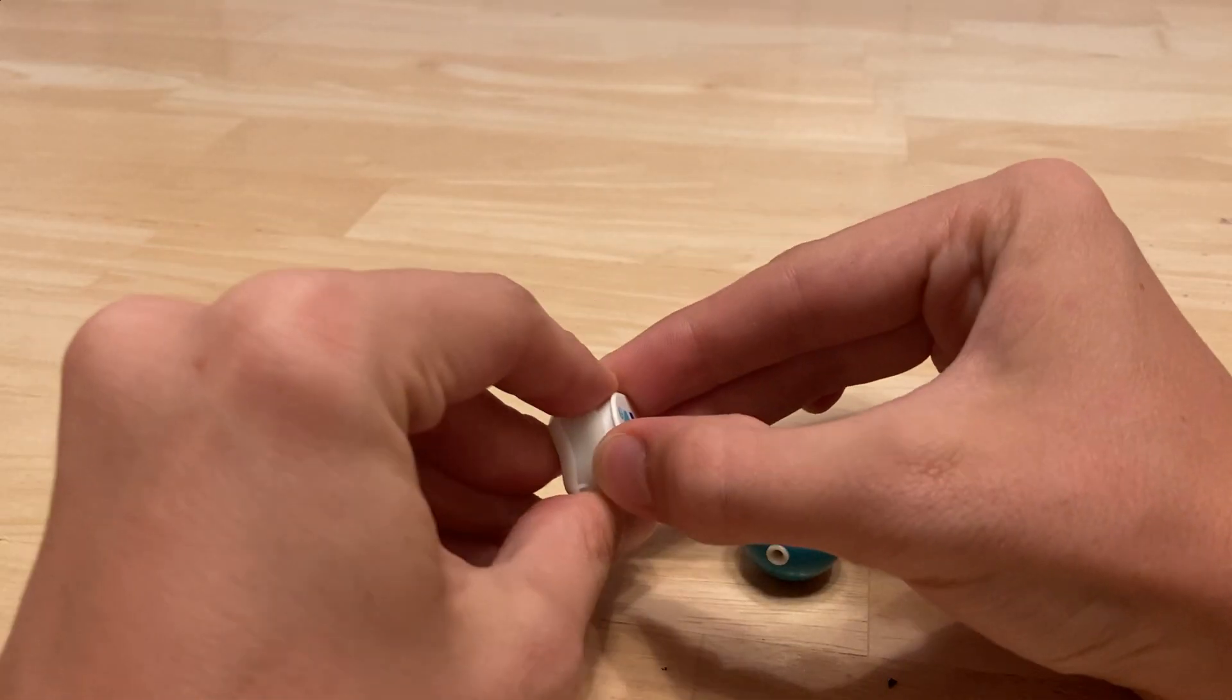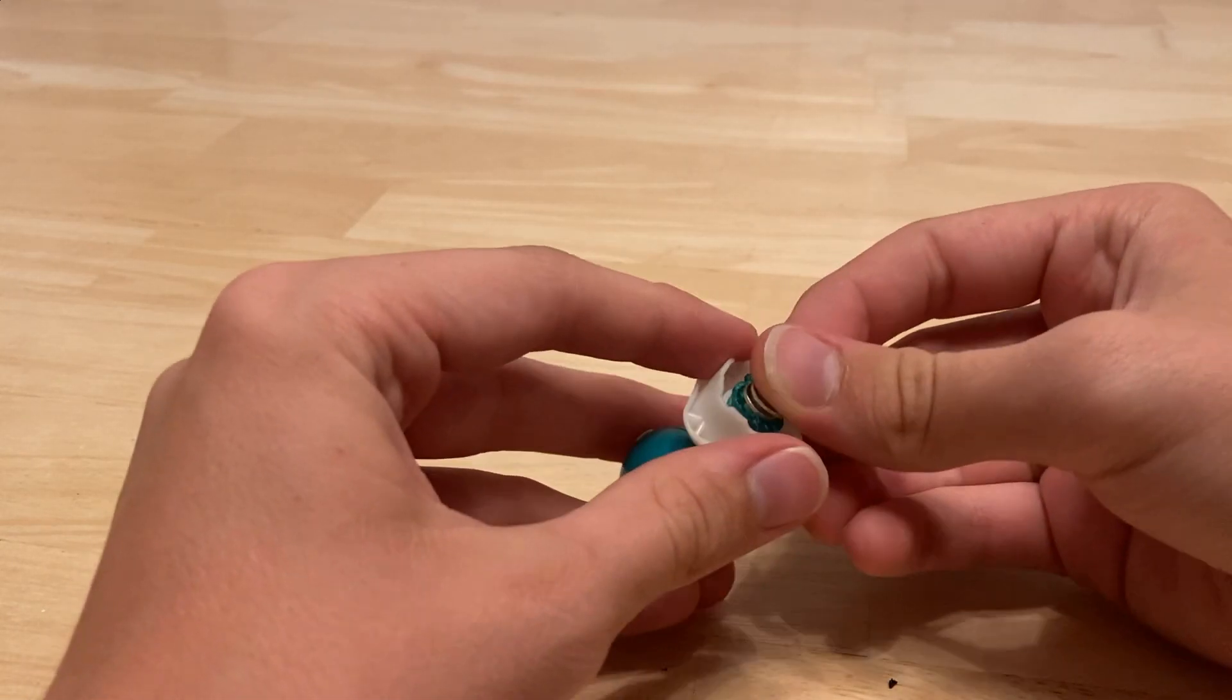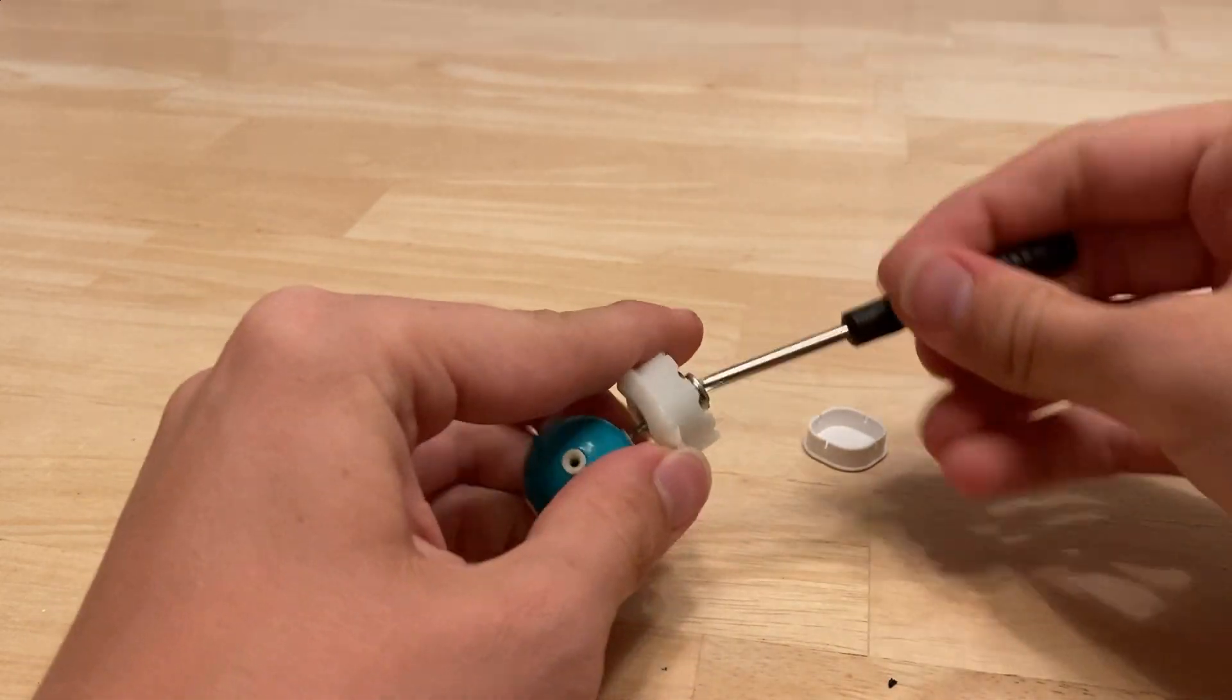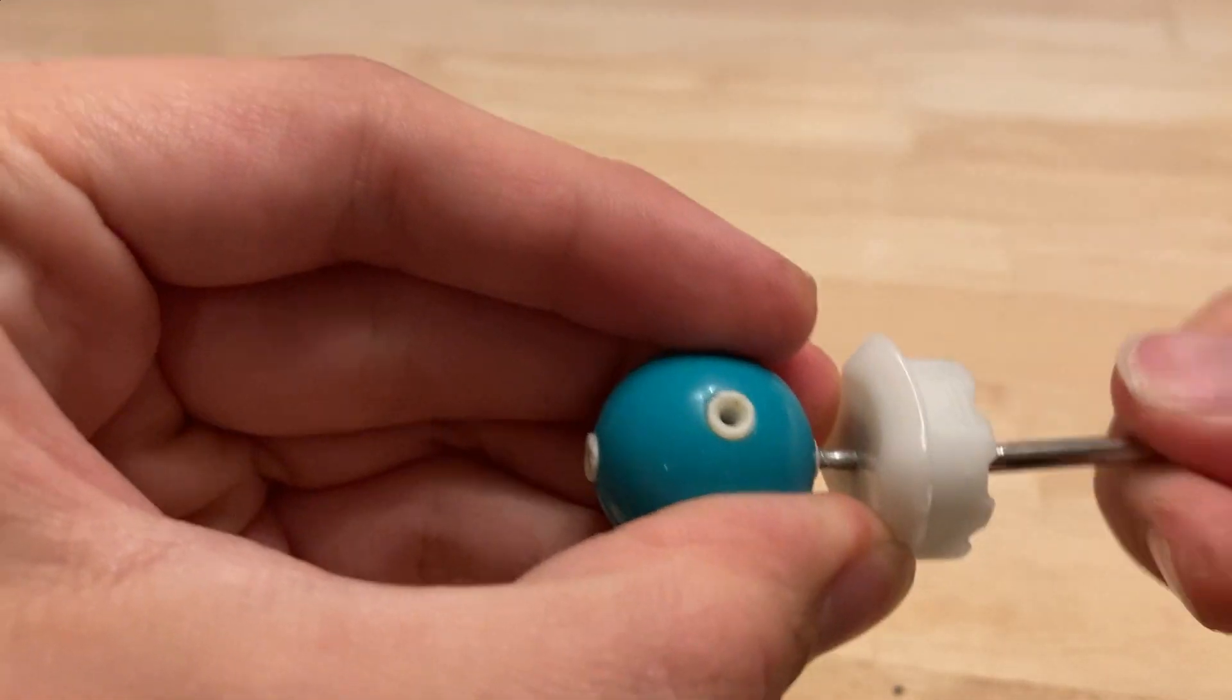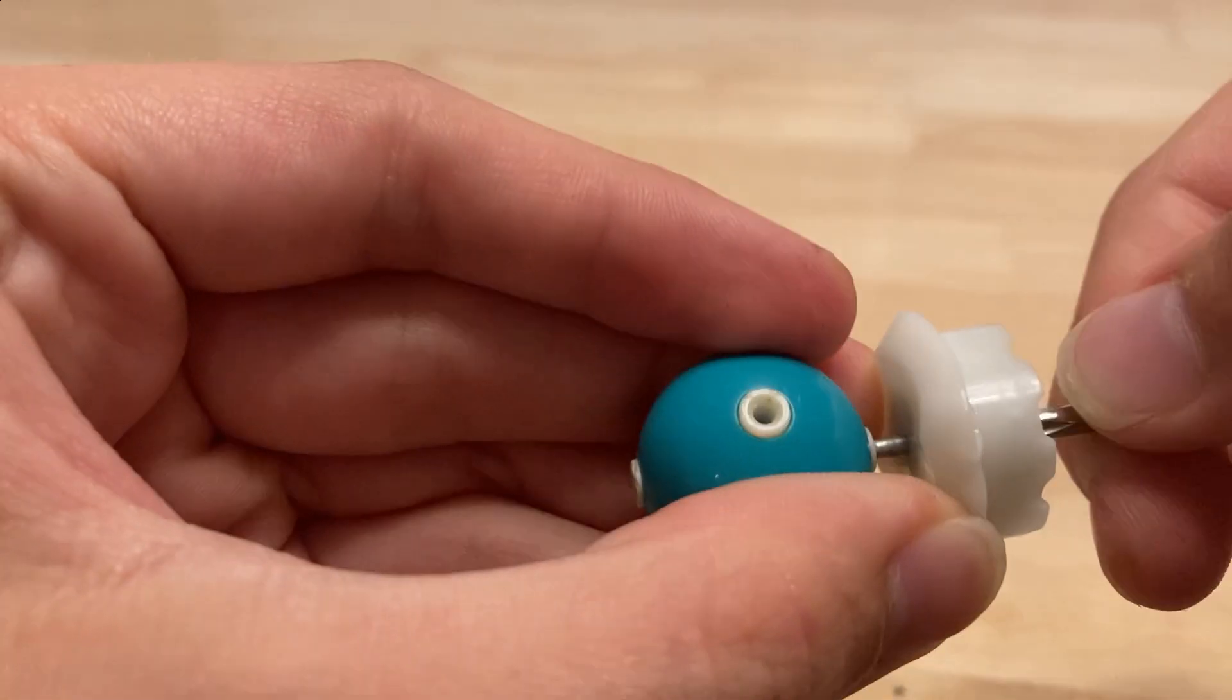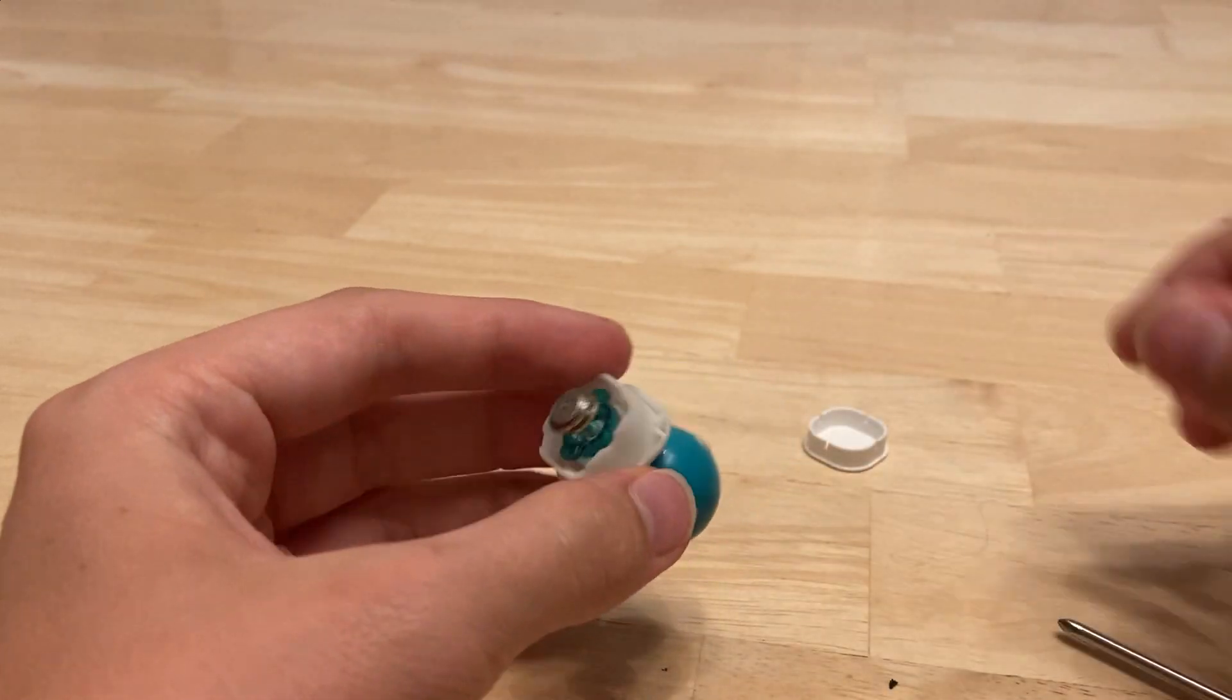Once you have your ball core, the first thing you want to do is take the screw from your Tianwa and screw it into the Moyu ball core. These are completely compatible. Screw it down until you don't see the threading anymore in the ball core, so like right there. Repeat this for all six screws.